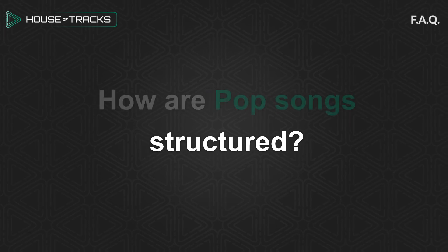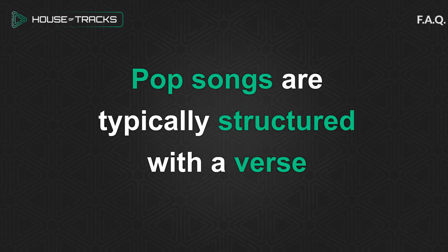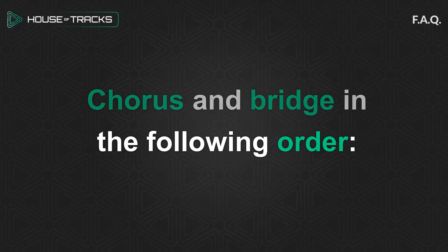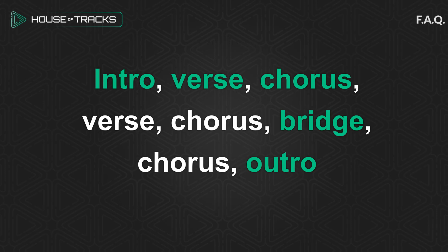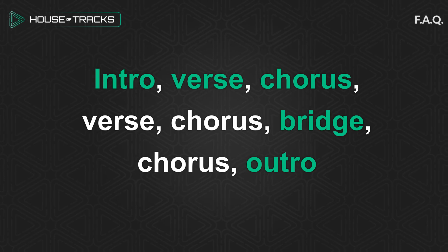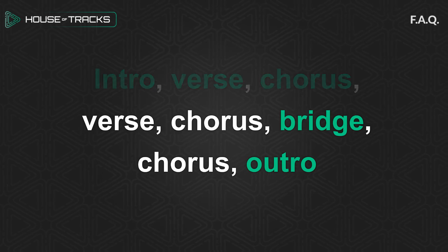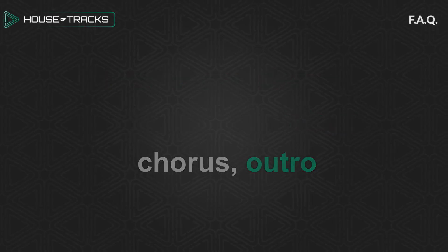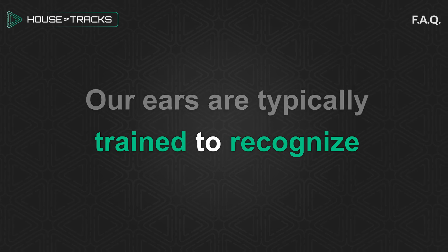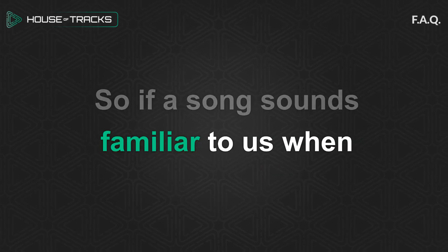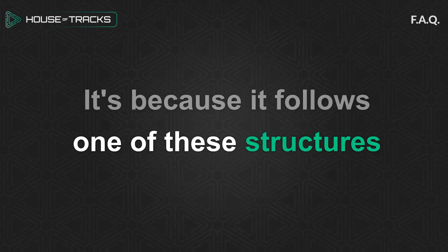How are pop songs structured? Pop songs are typically structured with a verse, chorus, and bridge in the following order: intro, verse, chorus, verse, chorus, bridge, chorus, outro. Our ears are typically trained to recognize the most commonly used song structures, so if a song sounds familiar to us when we hear it for the first time, it's because it follows one of these structures.